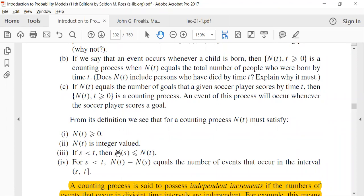And for S less than T, N(S) will be less than... if one time is less than the other time, then the count at the smaller time will be less than or equal to the count at the larger time. And for S less than T, the count at greater time minus the count at smaller time will equal the number of events that have occurred in this interval ST.